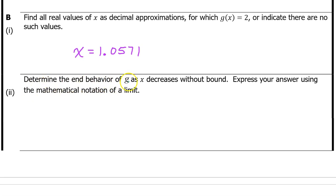Determine the end behavior of g as x decreases without bound. Express your answer using the mathematical notation of a limit. As x decreases without bound means the limit as x approaches negative infinity. If it had said as x increases without bound, we would write as x approaches positive infinity. You must put g of x right here. And now we are going to see if g of x is approaching infinity, is g of x approaching negative infinity, or is g of x approaching some constant, like an asymptote.